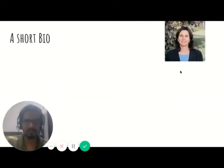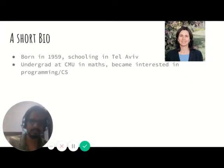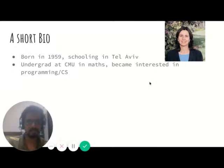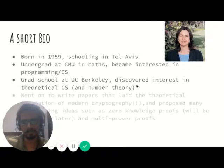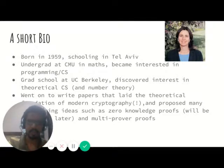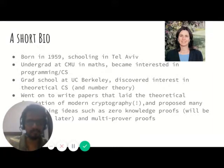Let me start with a short bio on Shafi. She was born in 1959, schooled in Tel Aviv, Israel. She pursued an undergraduate degree at Carnegie Mellon University in mathematics, where she became interested in programming and computer science. Her graduate school was UC Berkeley, where she discovered her interest in theoretical CS and number theory. She went on to write papers that laid the theoretical foundation of modern cryptography and proposed many interesting ideas such as zero-knowledge proofs and multiprover proofs.